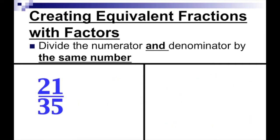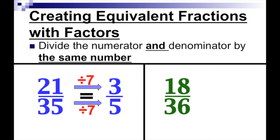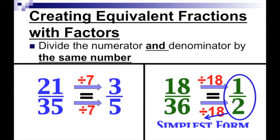For twenty-one over thirty-five, what number can divide both? Let's pick seven. Twenty-one divided by seven is three, thirty-five divided by seven is five — giving me three over five. And for eighteen over thirty-six, the biggest number that can divide both is eighteen. Eighteen divided by eighteen is one, thirty-six divided by eighteen is two — giving us one over two, which is our answer in simplest form or lowest terms.